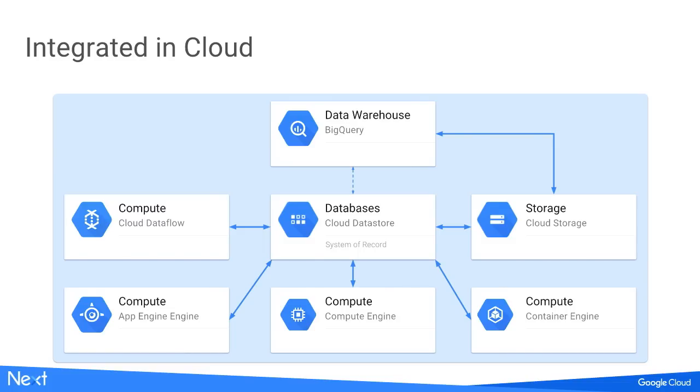The key integration points within the Cloud Platform include connecting from any compute service — App Engine or Container Engine. You can export data into Cloud Storage buckets and import it back in. These same export formats can be imported into BigQuery, so you can do a daily dump and run SQL over it in a data warehouse. The integration with Cloud Dataflow — or Apache Beam — allows fan-out reads and writes across the database in parallel, a powerful way to integrate into the rest of the platform.